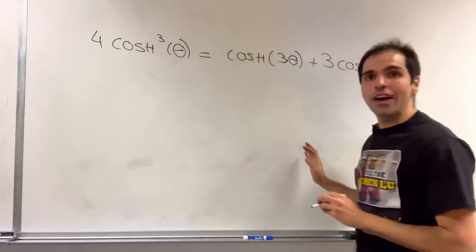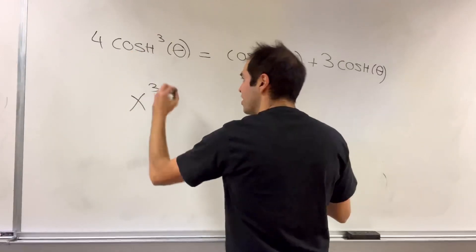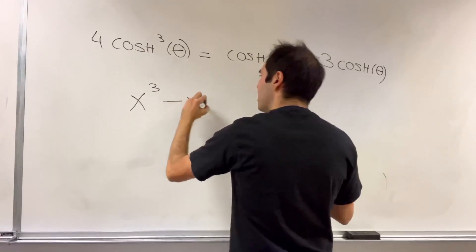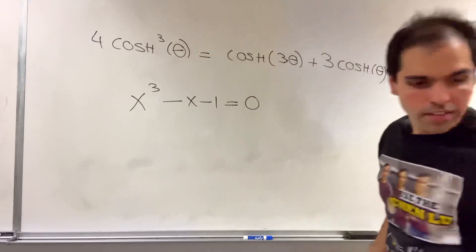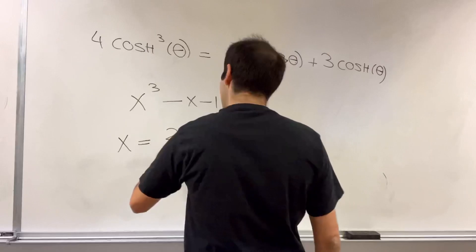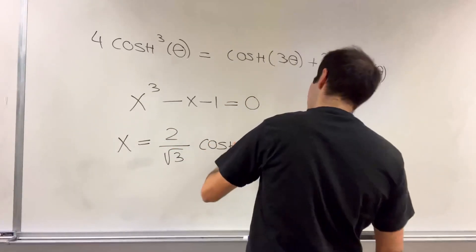And the reason I'm writing this is because if you take the plastic ratio, so x cubed minus x minus 1 equals 0, and you use the substitution x equals 2 over the square root of 3 cosh of theta,